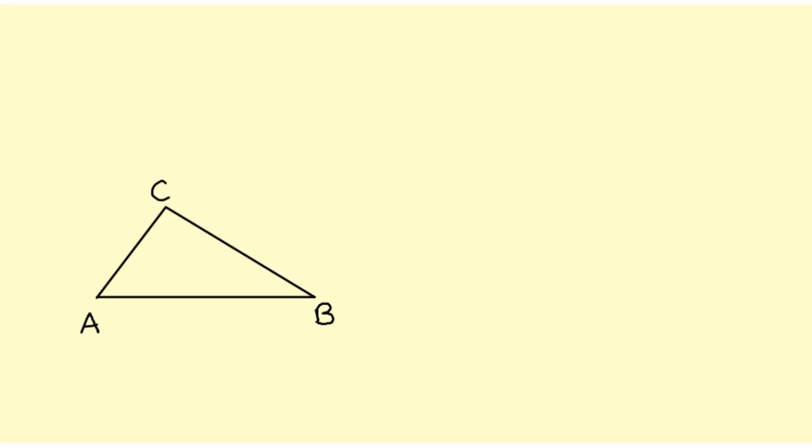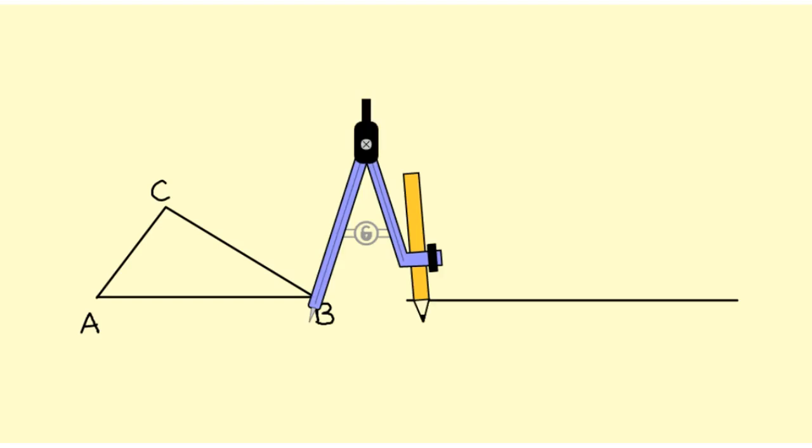For this construction, we're going to copy triangle ABC. To start, we take our straightedge and simply draw a segment that is clearly longer than AB. We're going to copy segment AB onto that.